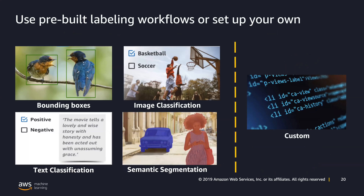Some of the pre-built labeling workflows: we make it easy for annotators to do bounding boxes on image data sets for object detection models. They can also easily choose categories for image classification or text classification. For semantic segmentation, labelers have an easy interface to go to the pixel level and identify where an object is. These are some of the pre-built labeling workflows to help make things easier. However, if we don't have what you need, you can create your own custom workflow — I've seen customers use this for audio classification.